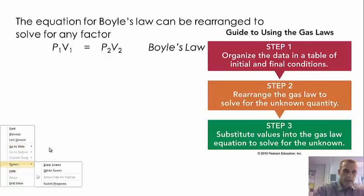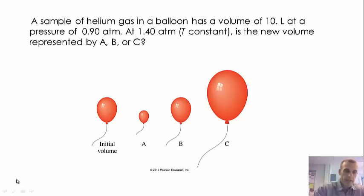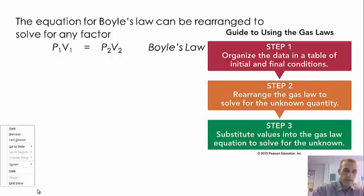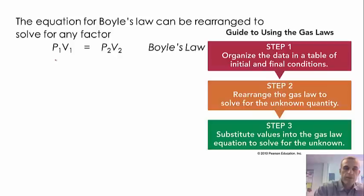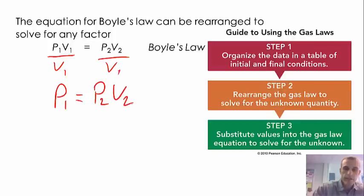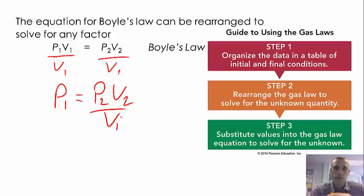Let me use the ink feature to show how that works out. If we divide both sides by V1, we're left with P1 equals P2V2 divided by V1. That's if we're solving for P1. It works the same way if we want to solve for V1, P2, or V2 — depending on which variable you want to isolate, you rearrange the equation to fit the appropriate variables.